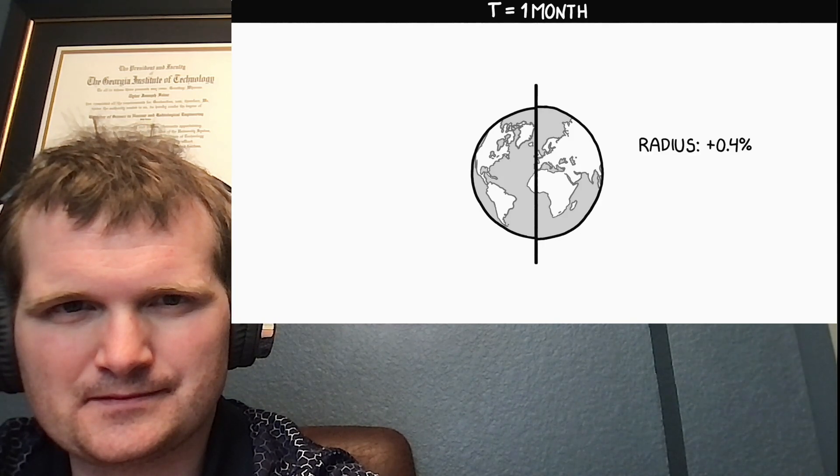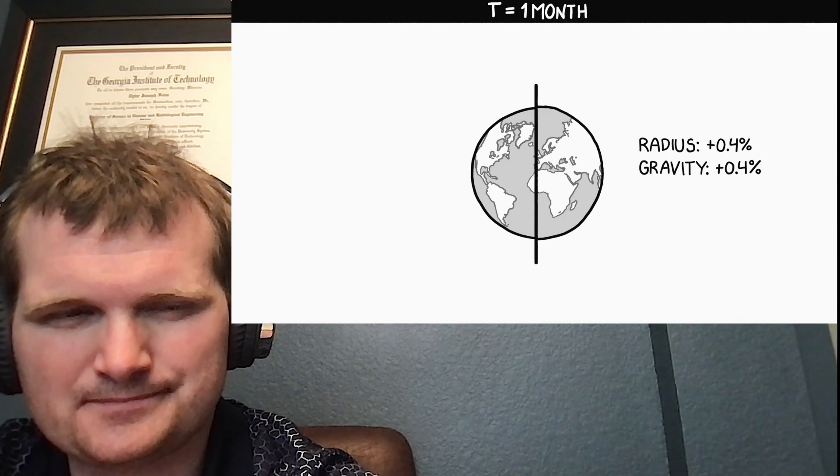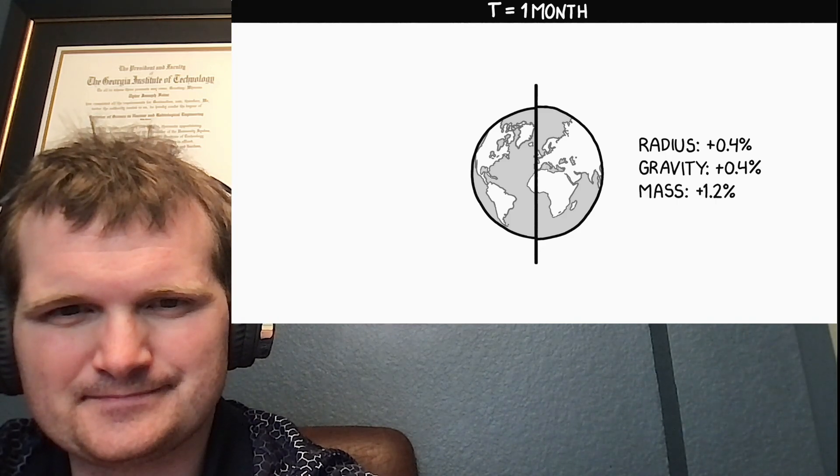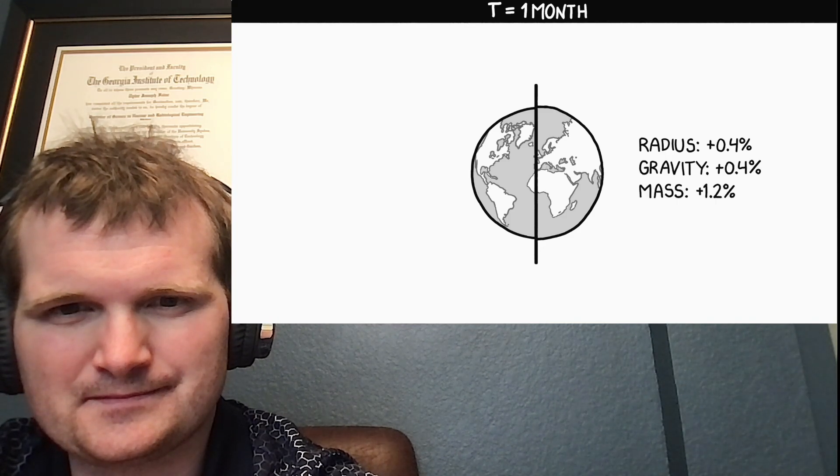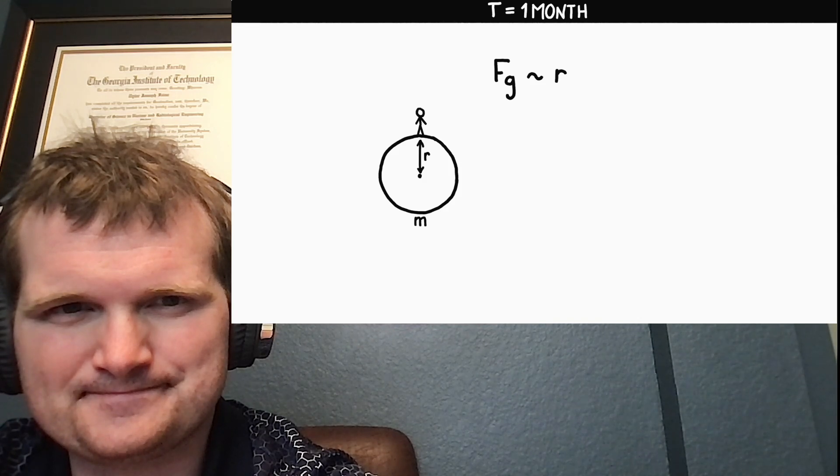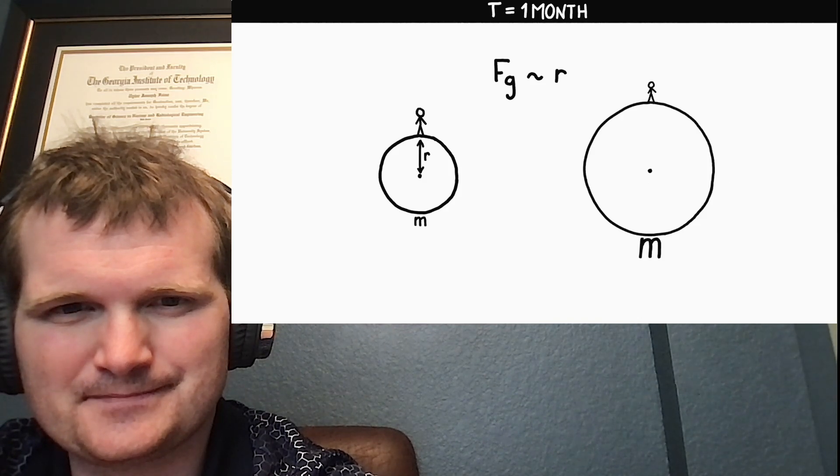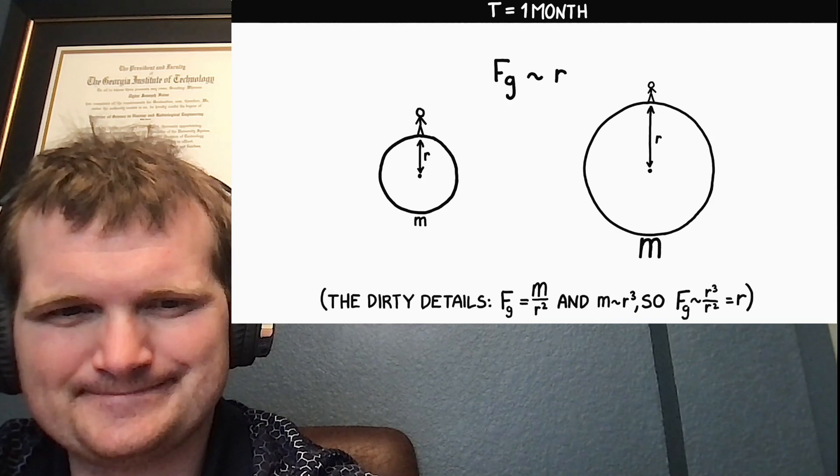Surface gravity would also only have gone up 0.4 percent, even though the Earth's mass would have increased by 1.2 percent. Surface gravity is proportional to radius, which is because as the planet grows, it gets more massive, but you also get further away from the middle.